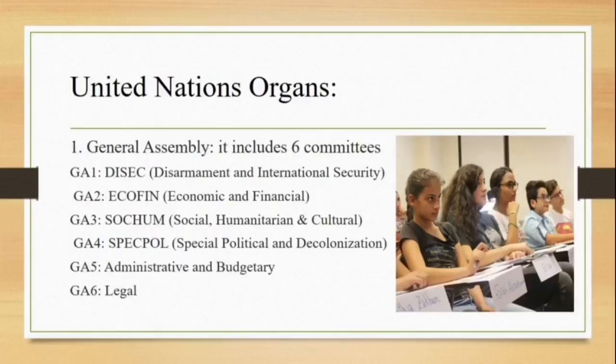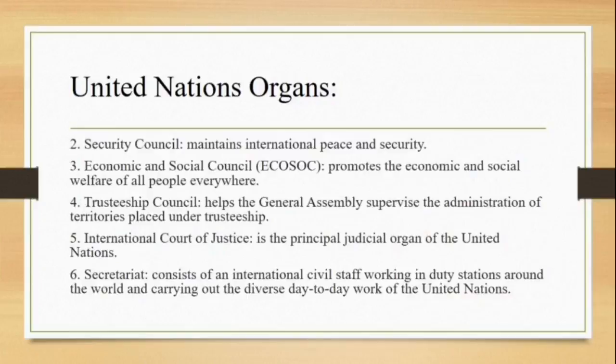The United Nations organs are six. The General Assembly by itself includes six committees: GA1, the DISEC; GA2, the ECOFIN; GA3, SOCUM; GA4, SPECPOL; GA5, Administrative and Budgetary.